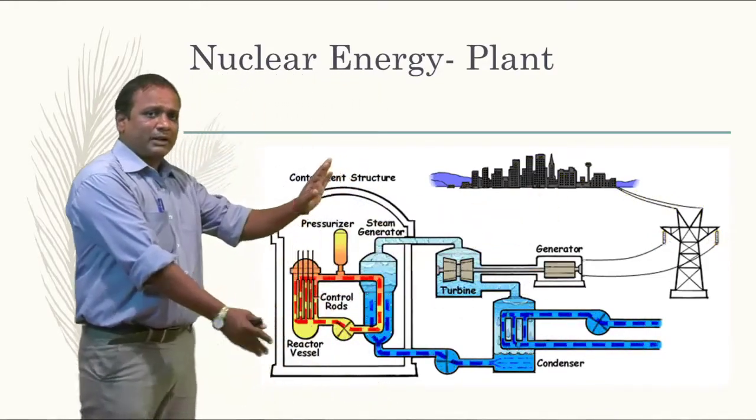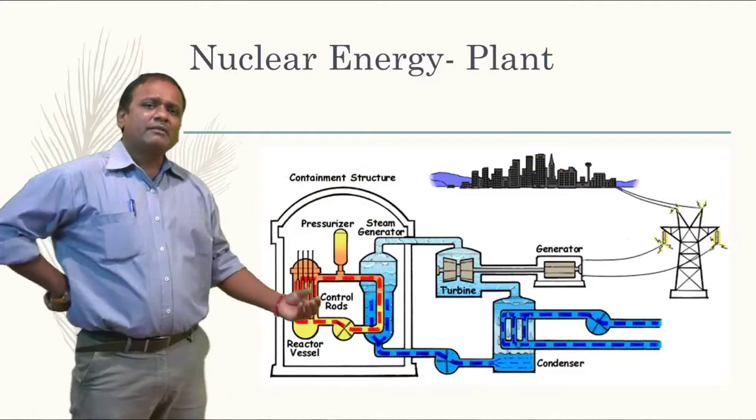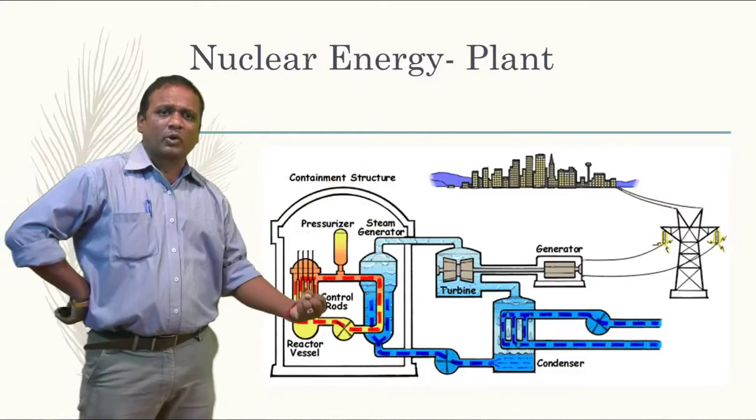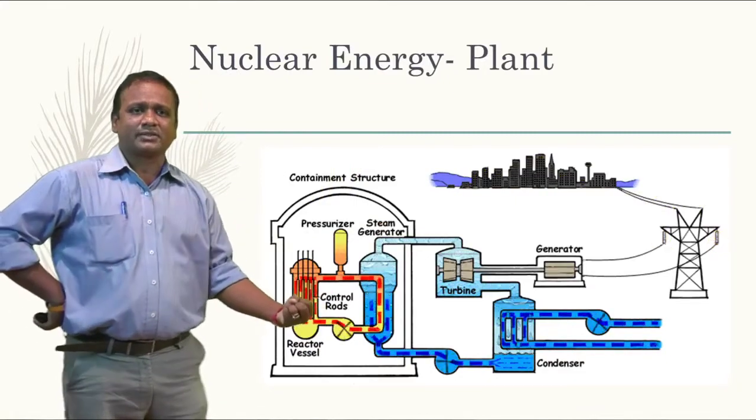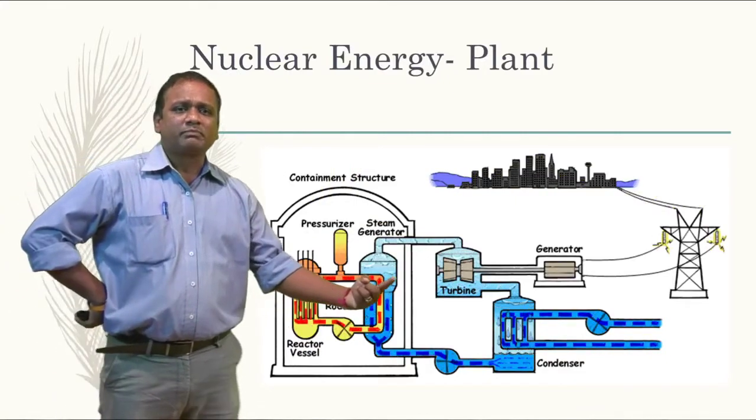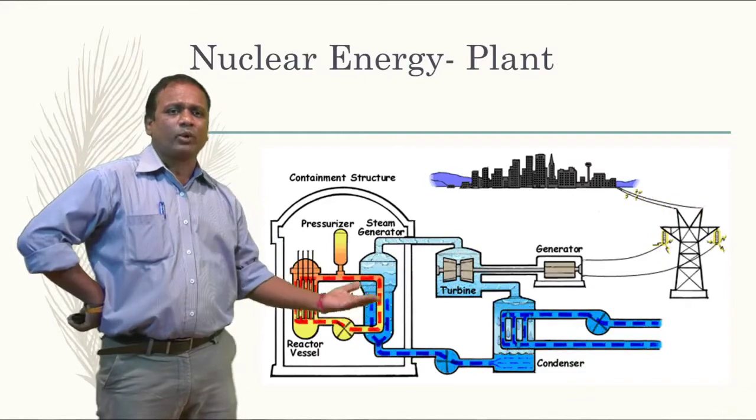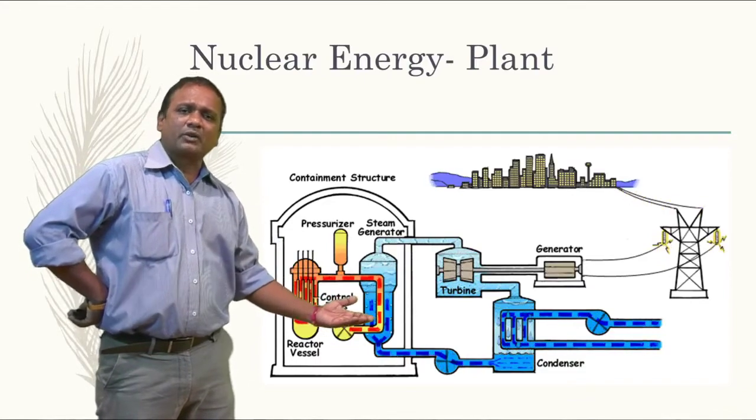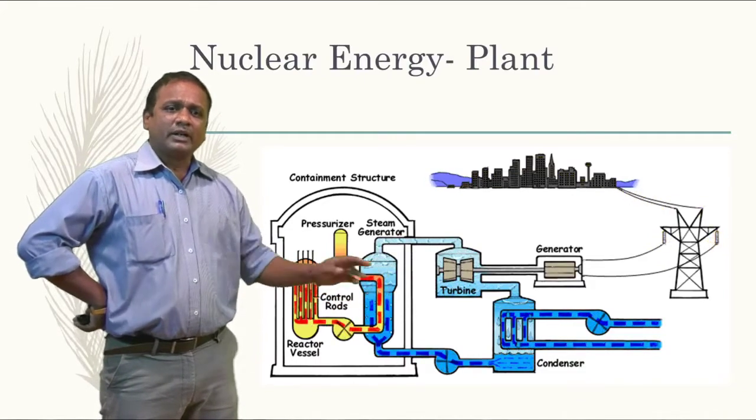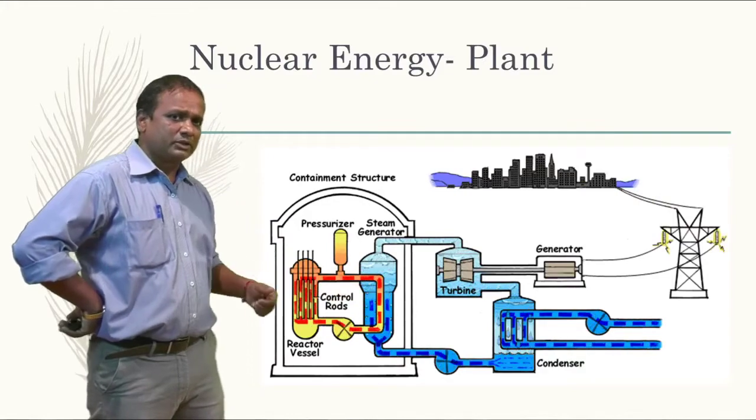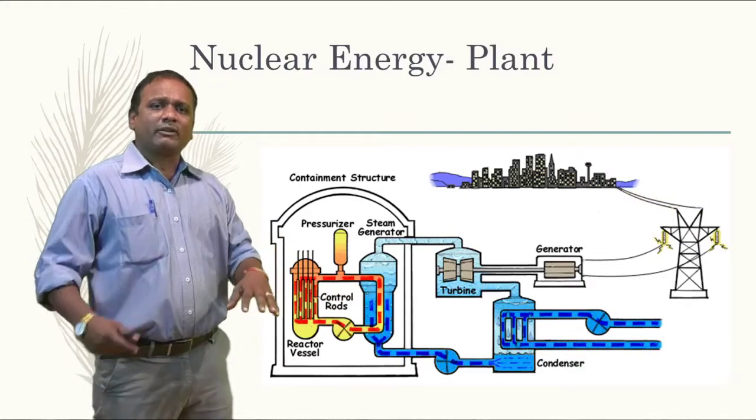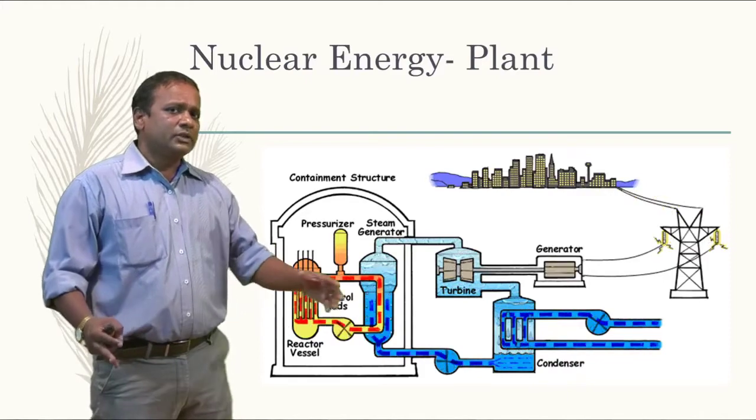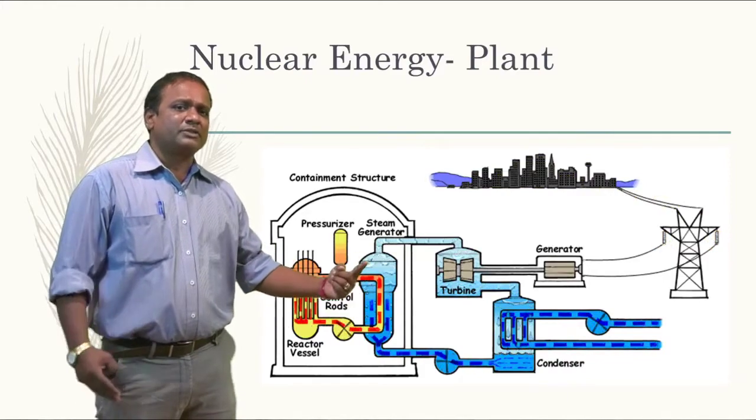Now try to understand how this whole plant works. Whenever the nuclear energy has been developed, the heat energy comes into existence. That heat energy will flow through this tube into this particular boiler. The boiler is the one which converts the water into steam. You can see this control can be used in the control rods. These control rods will have control over the development of energy or heat here, which in turn has control over developing steam here.